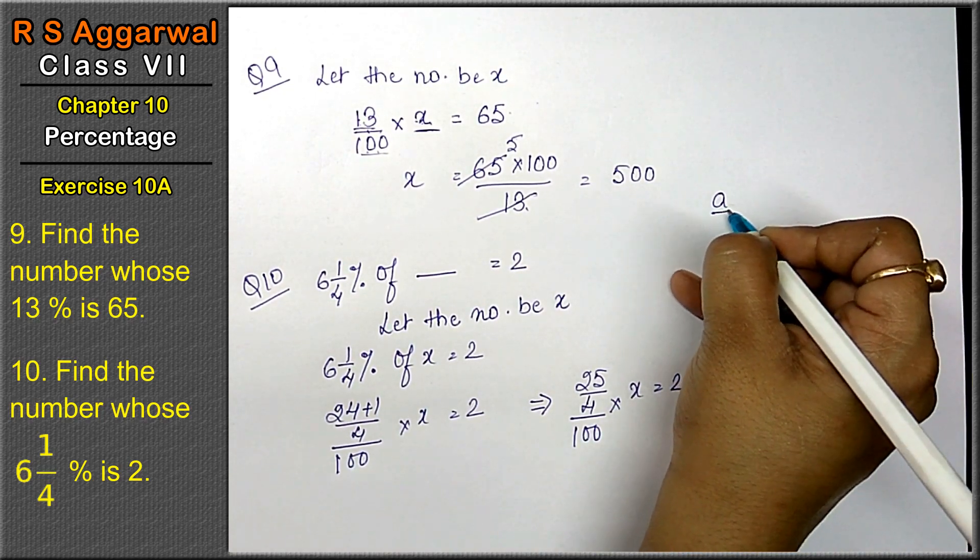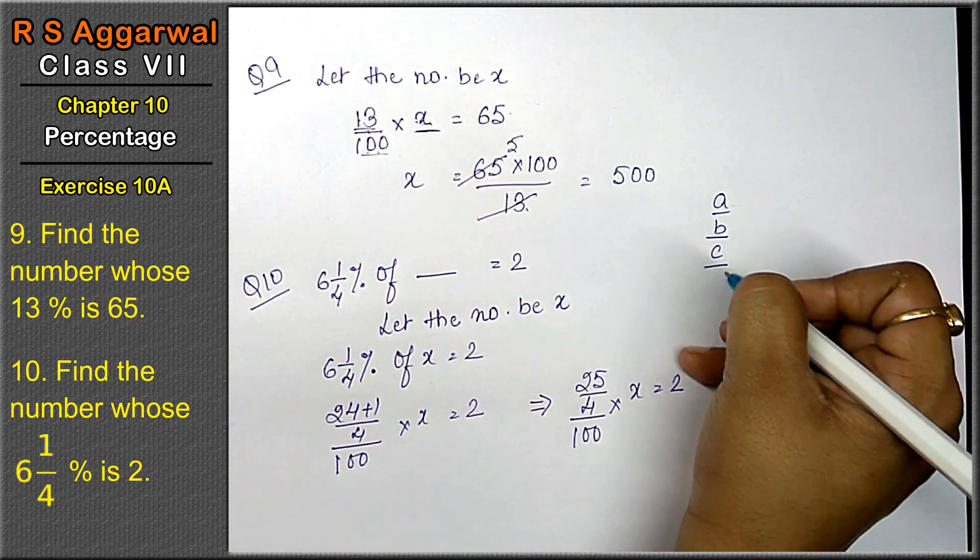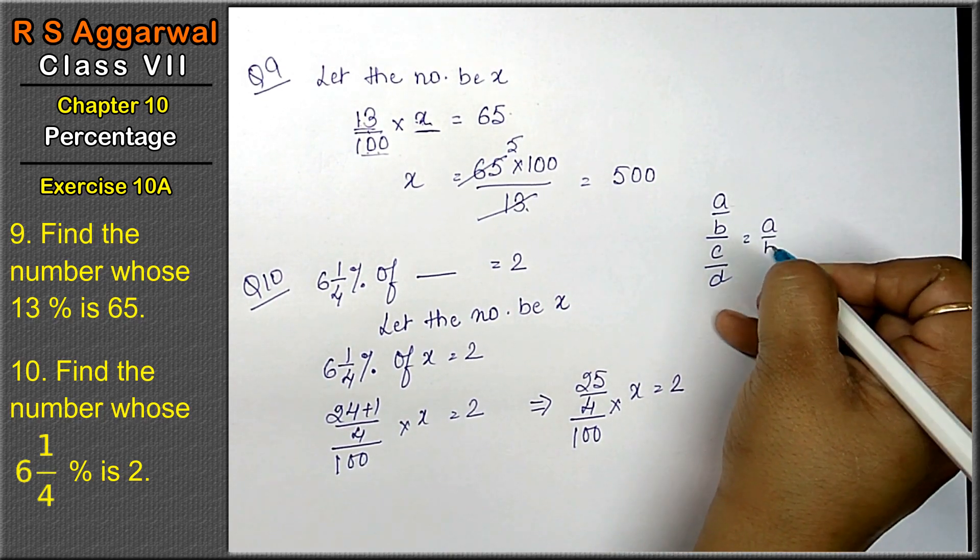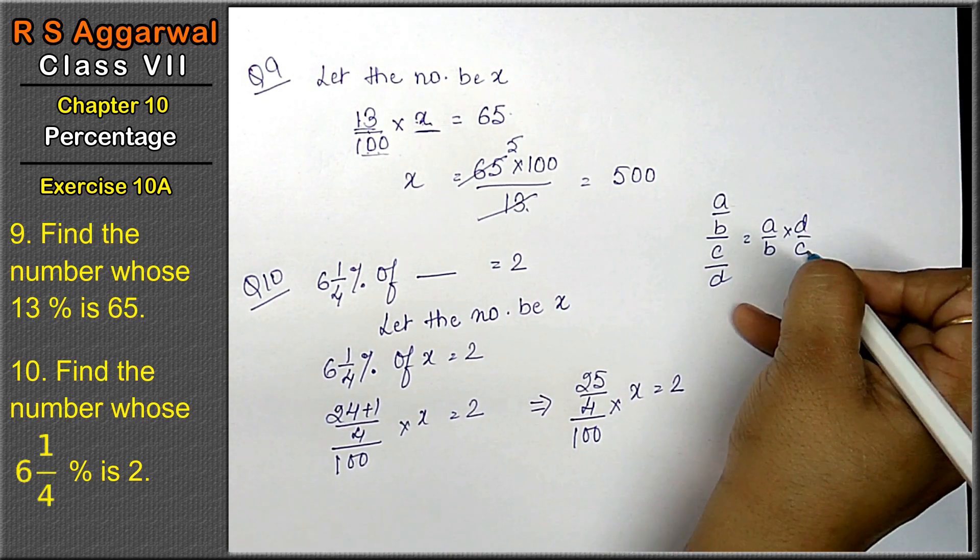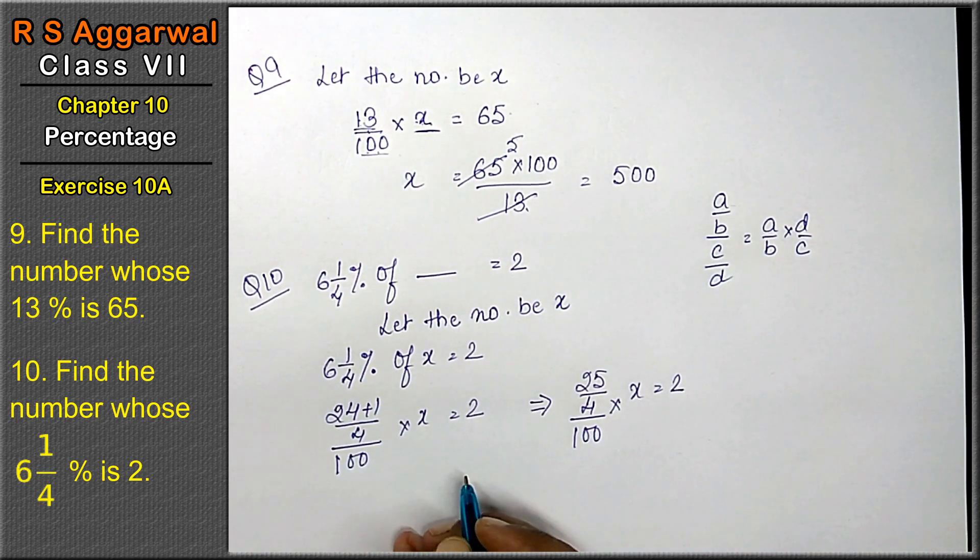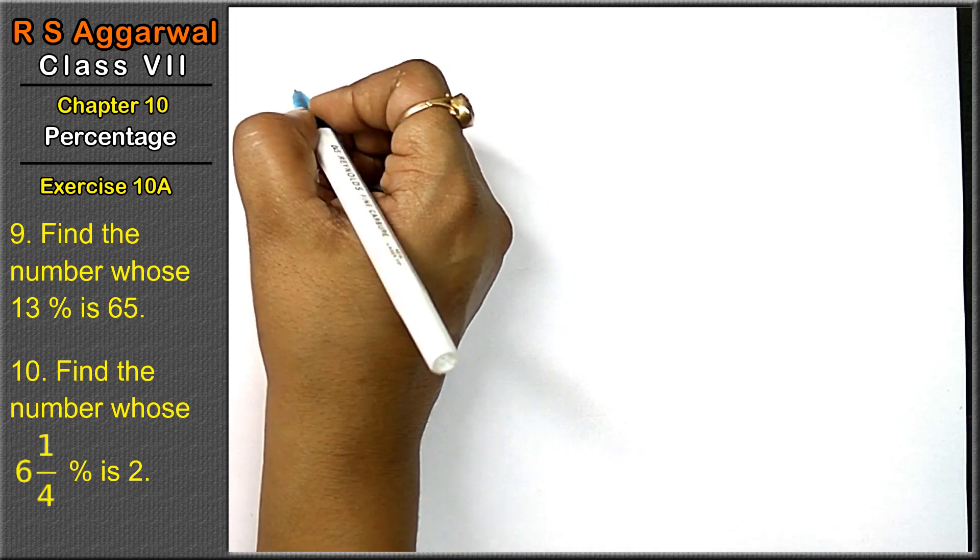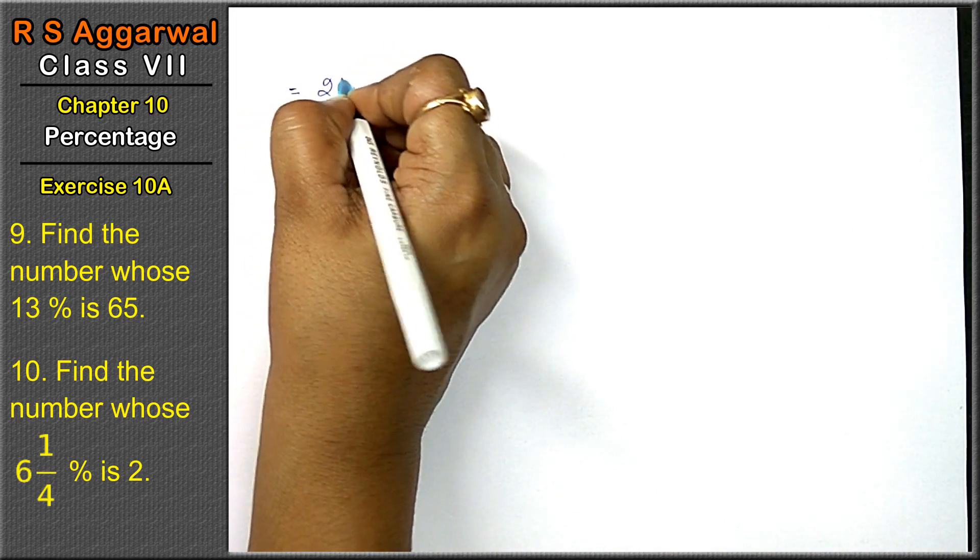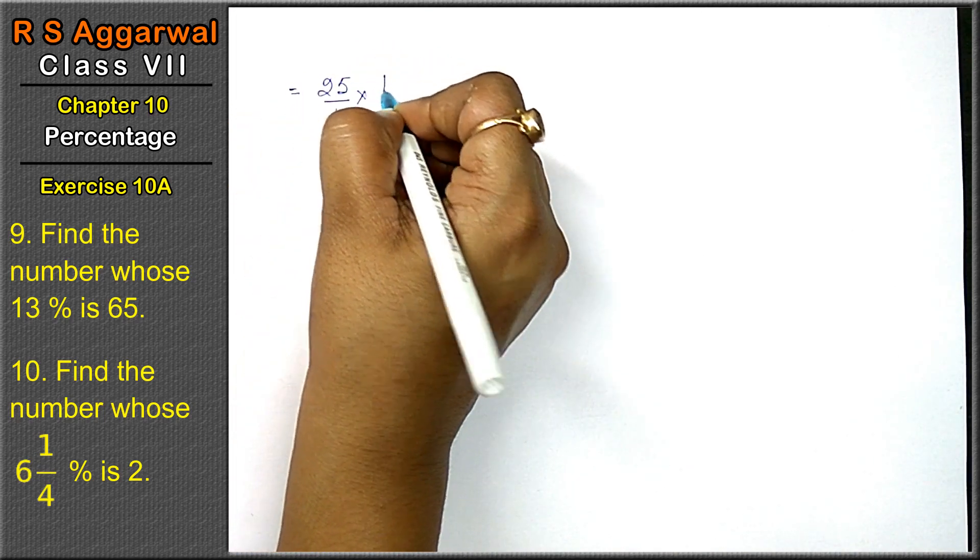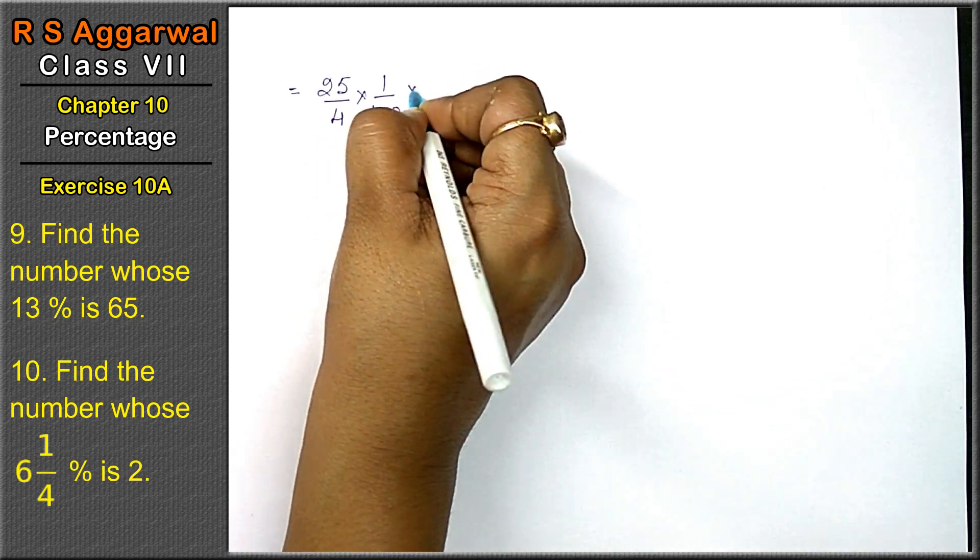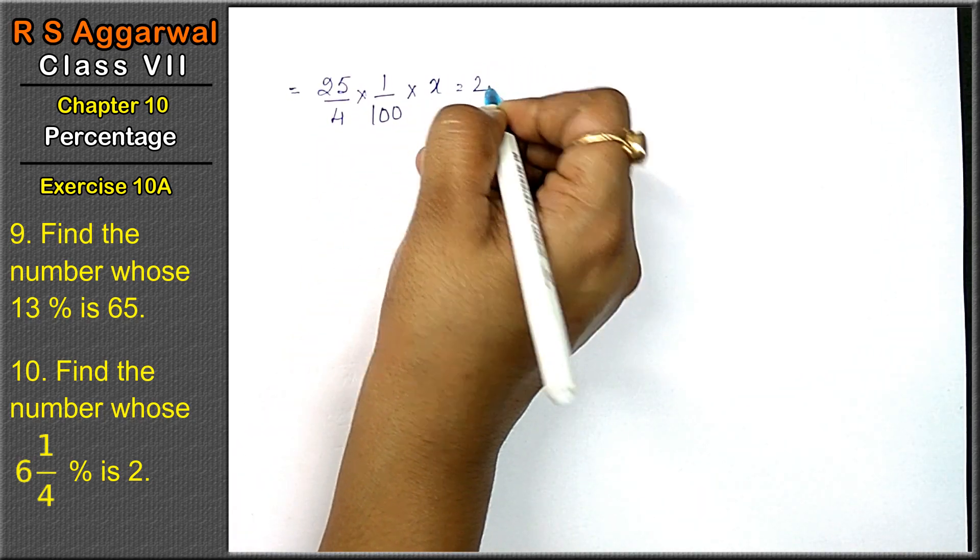Friends a upon b upon c upon d की form को हम a upon b into d upon c भी लिख सकते हैं. As we all know that, तो इसको हम क्या लिख सकते हैं? इसको लिखेंगे हम 25 upon 4 into 1 upon 100 into x equals to 2.